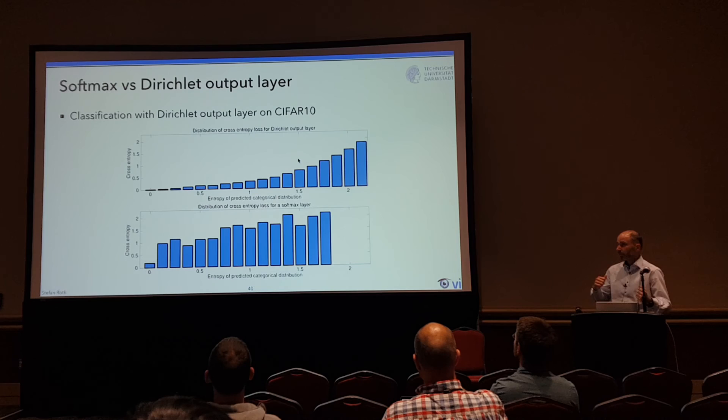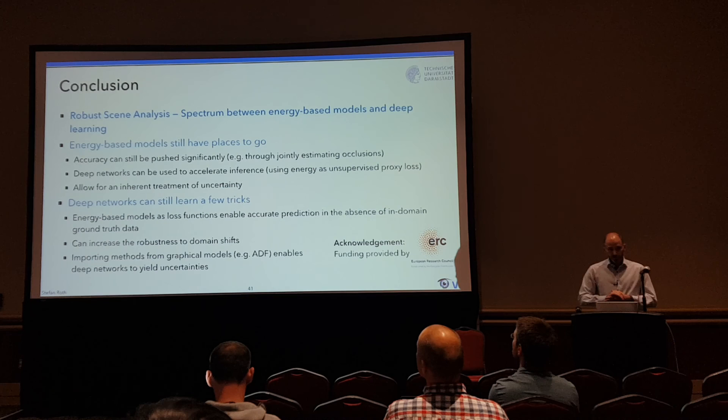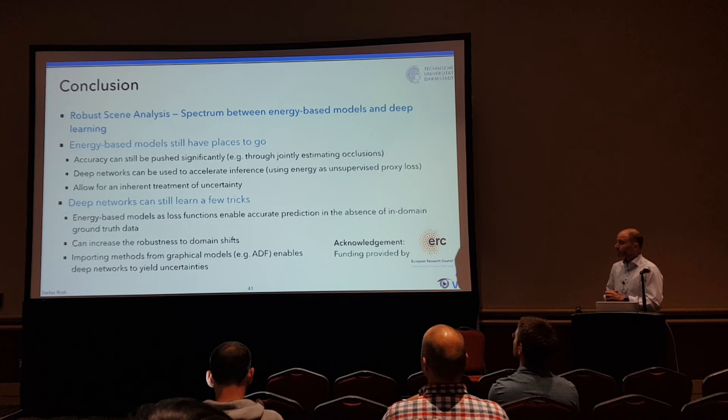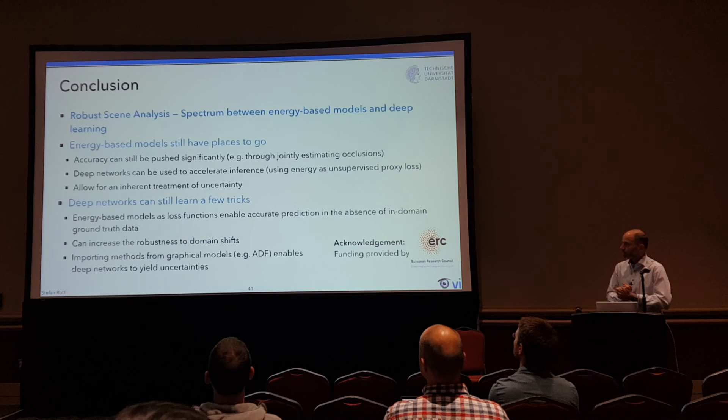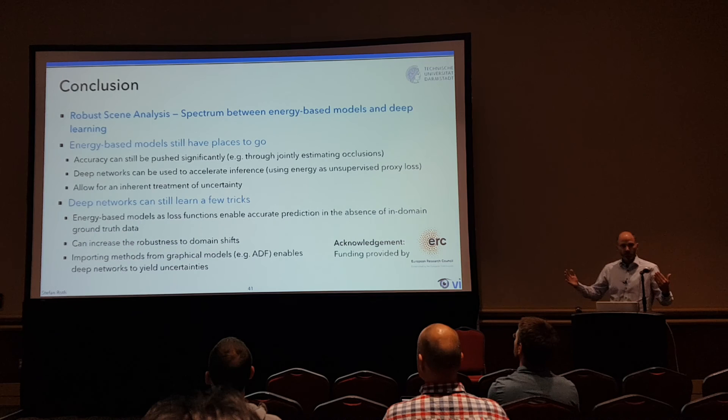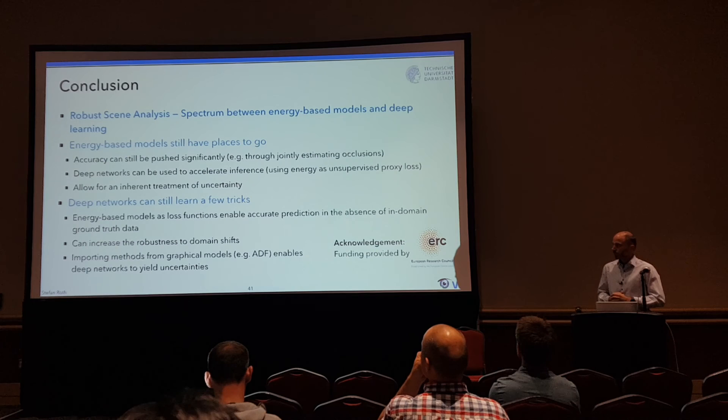To conclude: I talked about robust scene analysis, particularly in the context of motion, with an outlook on other domains like classification. I argued that energy-based models and deep networks have a lot to learn from one another. Energy-based models can help deep networks improve robustness to domain shifts, and we can also borrow from the probabilistic methods literature to make deep networks aware of when and where they work. Thank you very much.